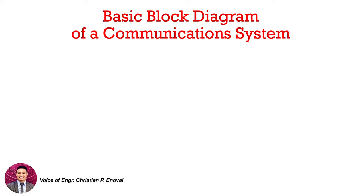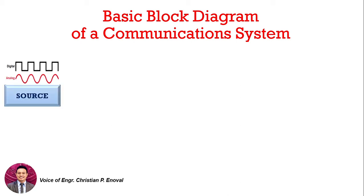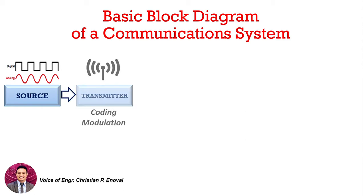The first block in the communication system diagram is our source. When we talk about the source, these are where our signals, information, and data come from. It can be in any form — it can be in digital form or it can be in analog form.